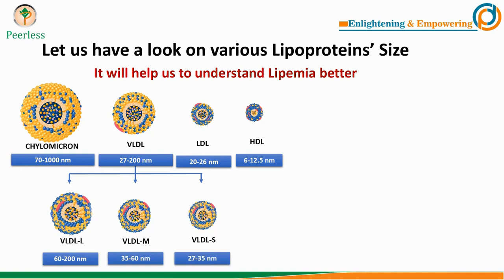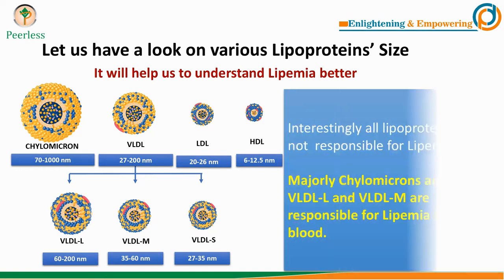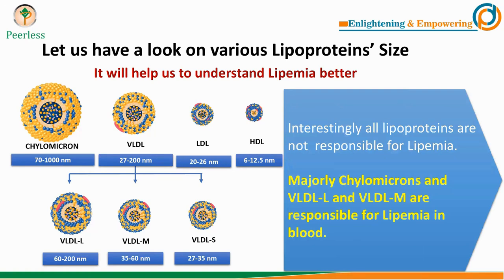There are various lipoprotein particles in our blood, such as chylomicrons, VLDL, LDL, HDL, large-sized VLDL, medium-sized VLDL, and small-sized VLDL. Interestingly, not all of these lipoproteins are responsible for lipemia. Majorly, chylomicrons and large-sized and medium-sized VLDL are the ones responsible for lipemia in our blood.